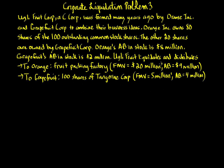Ugly Fruit liquidates and distributes the following items. There are going to be two variations — all the background information stays the same; only what's distributed to Orange and Grapefruit changes. In variation one, Orange receives a fruit packaging factory with a fair market value of $20 million and an adjusted basis of $9 million. Grapefruit receives 100 shares of Tangerine Corp, a separate corporation, with a fair market value of $5 million and an adjusted basis of $4 million.